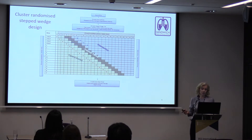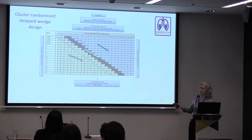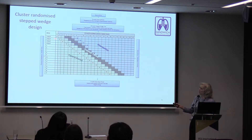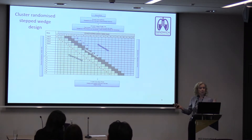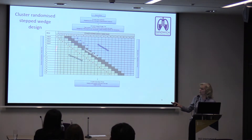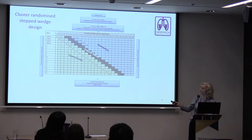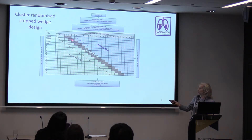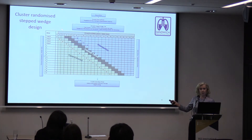The design is a cluster randomized stepped wedge design with 17 sites — one site has two PICUs, so 18 units total. Each line represents a cluster or site. They are randomized and every four weeks one site crossed over; they entered a training period before transitioning to the intervention period. The rationale for not fully introducing the intervention until after training was to avoid contaminating the control and intervention arms.